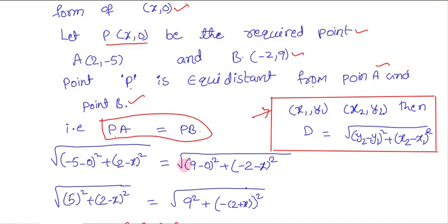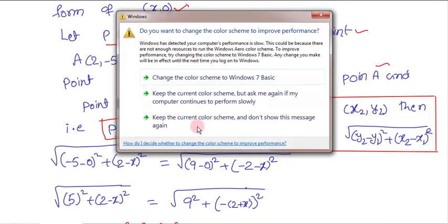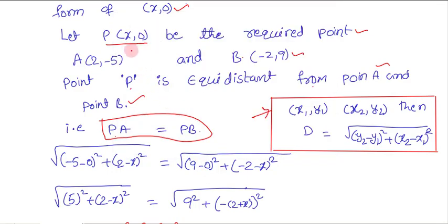This equals PB. For PB, P is x1, y1 and B(-2, 9) is x2, y2. So PB equals the square root of (9 minus 0) whole square plus (-2 minus x) whole square.